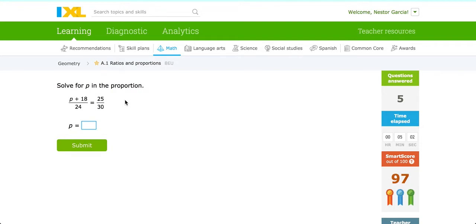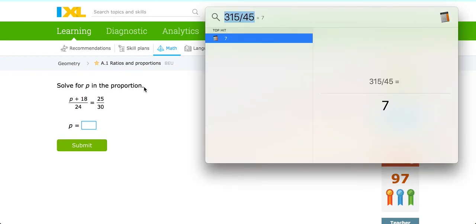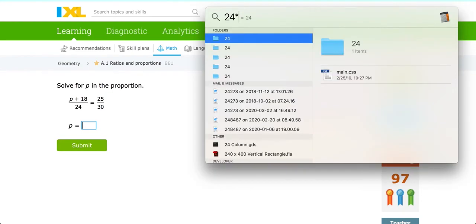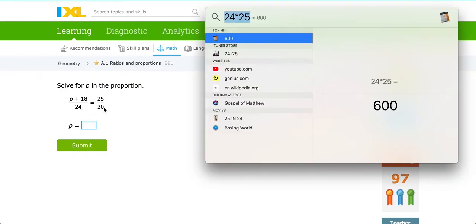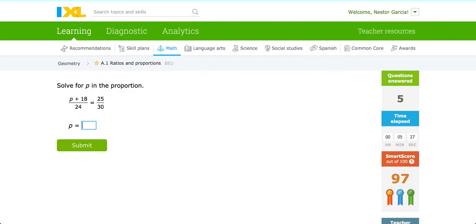Another way to think about this is ignore this P plus 18 for a minute. Just think of that as one big missing value. If we take 24 times 25, to use the shortcut we did earlier, 24 times 25, that is 600. We then take 600 divided by this third value, which is 30. We divide this 600 by 30. You get 20.